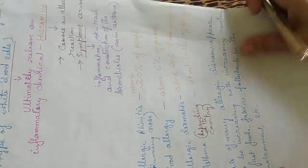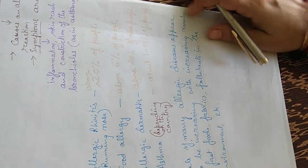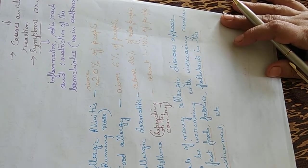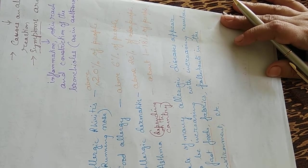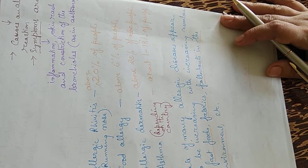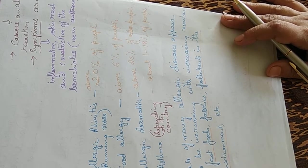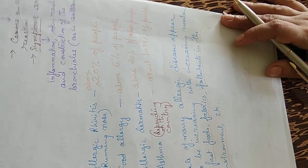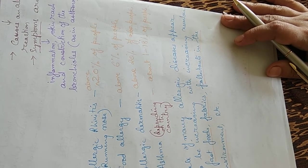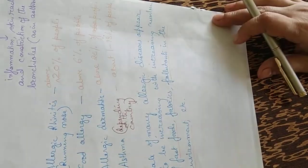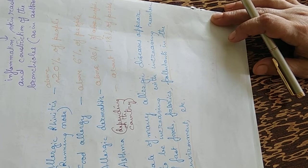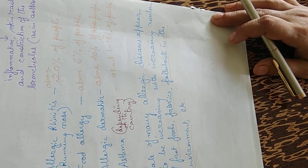Some allergic diseases include allergic rhinitis, also known as running nose, affecting about 20% of people. Food allergies affect above 6% of people. Allergic dermatitis affects about 20%. Asthma, depending on the country, affects 1 to 18% of people. The rate of many allergic diseases appears to be increasing with the increasing number of fast foods, fabrics, and pollutants in the environment.